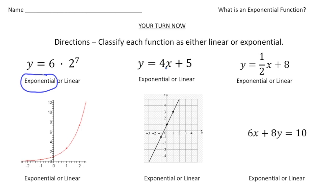The next one, y equals 4x plus 5. That would be linear. Y equals 1 half x plus 8. That would definitely be linear as well. Here we have again a function that kind of looks like it's taking off like a rocket. So this would definitely be exponential.